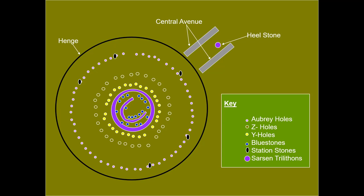Moving inward, there are Z holes and Y holes, which are again just holes carved into the chalk. The black dots represent what are called station stones. All of these are represented differently in altering interpretations of the purpose and function of the Stonehenge monument, and you'll hear about all of these later. I just wanted to show you where they were in orientation to each other.